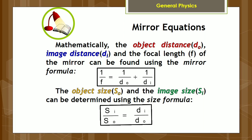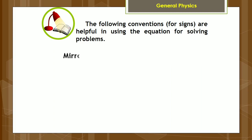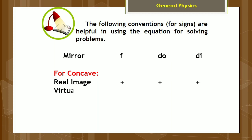The following sign conventions are helpful when using the equations for solving problems. For a concave mirror, if the image formed is real, the focal length, the object distance, and the image distance are all positive. If the image formed is virtual, the focal length and the object distance are both positive, while the image distance is negative.